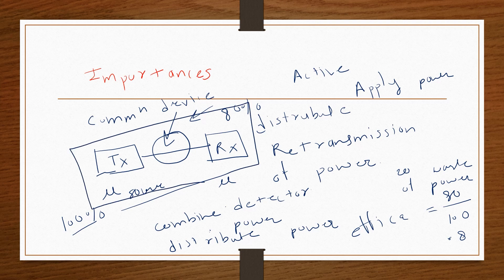That's why maximum time we want passive devices to combine, redistribute, or between the communication link. It is a good practice that we have to use passive devices. That's why the passive devices play a very important role in any communication system.